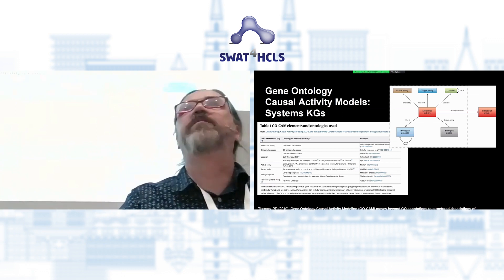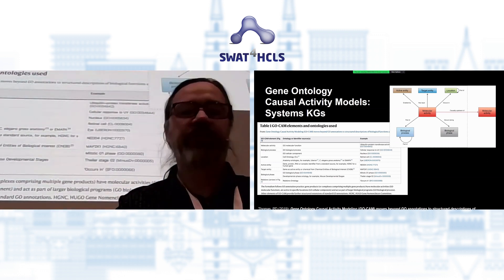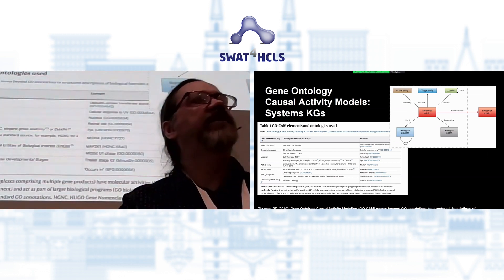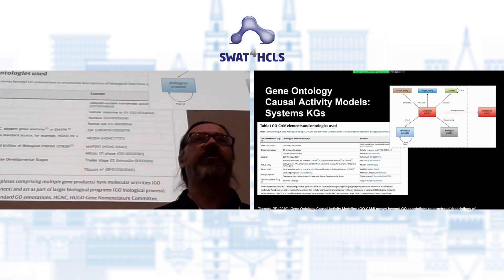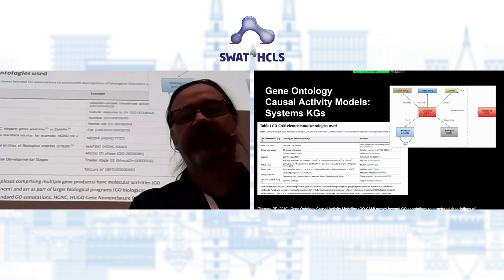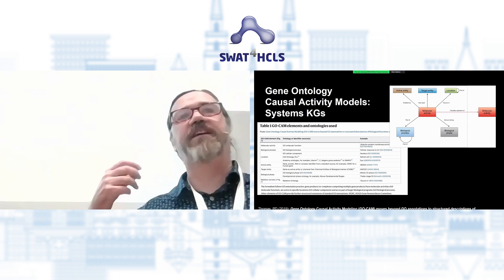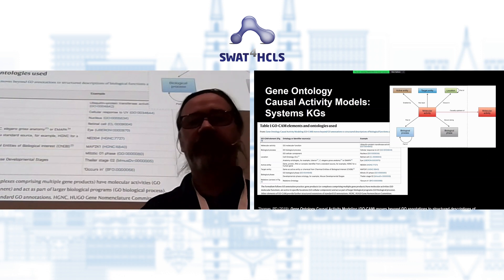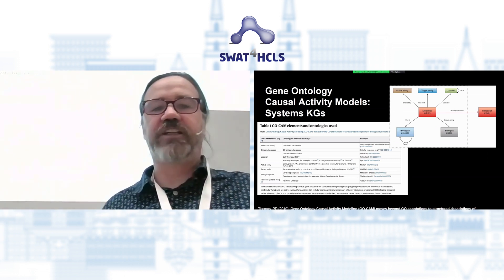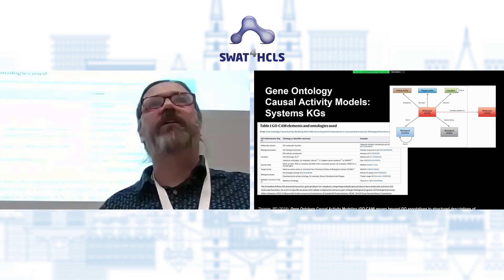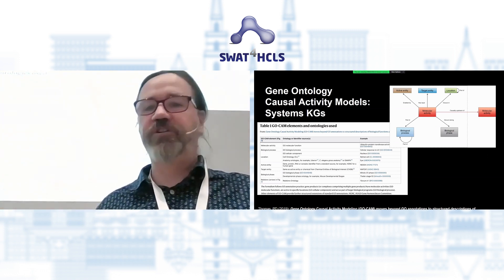Another newer development within knowledge graphs is systems biology knowledge graphs in the form of GO-CAM — gene ontology causal activity models. This is a new development in annotation within the gene ontology. Whereas historically we've had a very simple triple-oriented annotation model — subject gene, object GO term, maybe some reification describing the evidence — this doesn't truly capture the way genes act together as part of an ensemble, like a MAP kinase cascade where one gene is phosphorylating another. So we've developed GO-CAM, a new data model for describing how genes work together to achieve biological objectives, making heavy use of other OBO ontologies including the cell ontology and Uberon anatomy ontology.